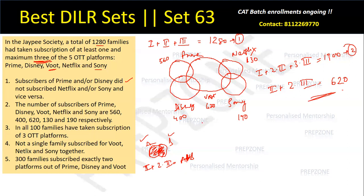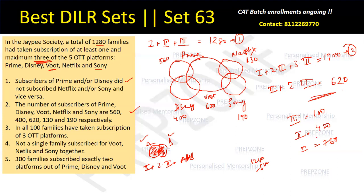Now an additional condition says all 100 families have taken the subscription of three OTT platforms. So exactly three equals 100. Substituting back: exactly two plus twice of 100 equals 620, so exactly two equals 420. And then exactly one plus 420 plus 100 equals 1,280, which gives exactly one equals 760. Please check this calculation.